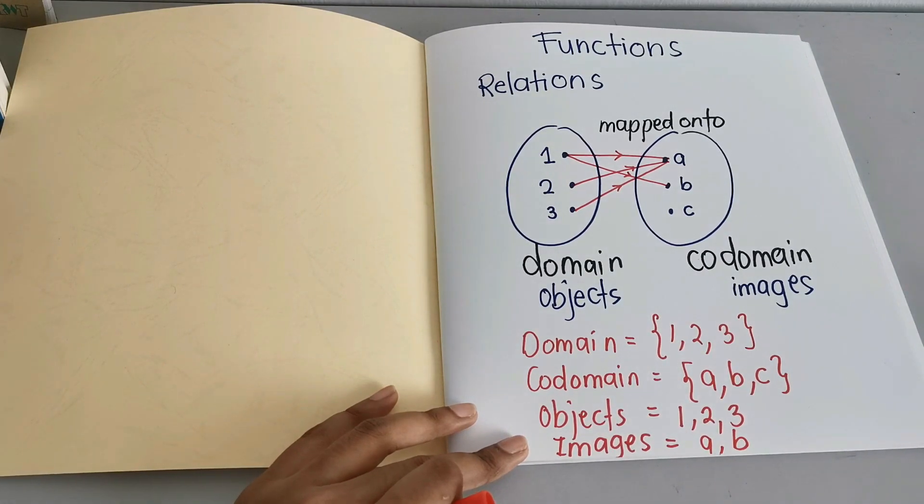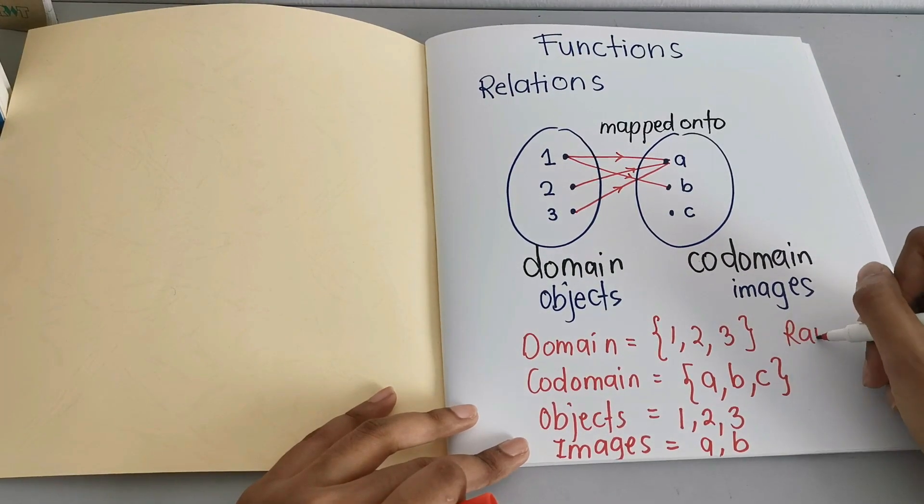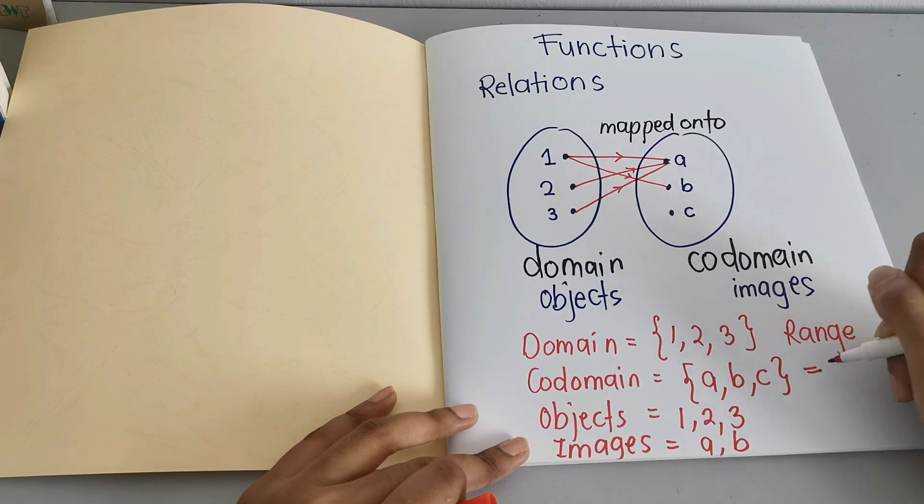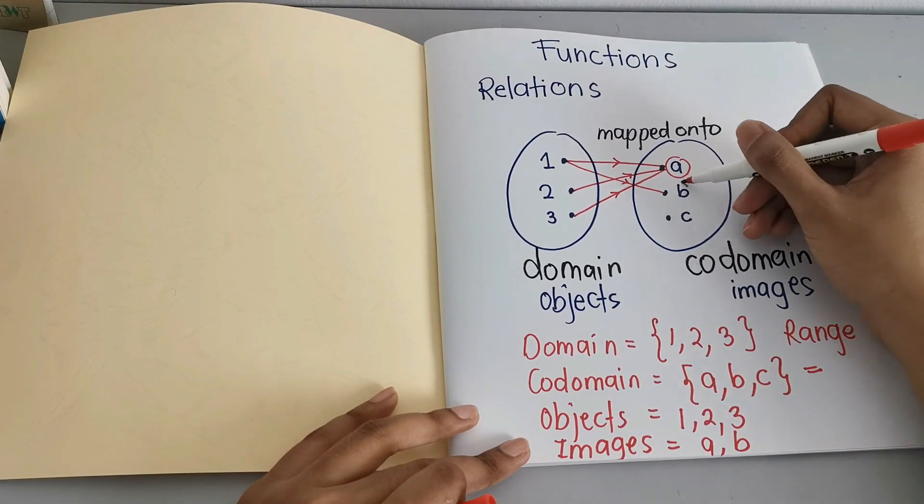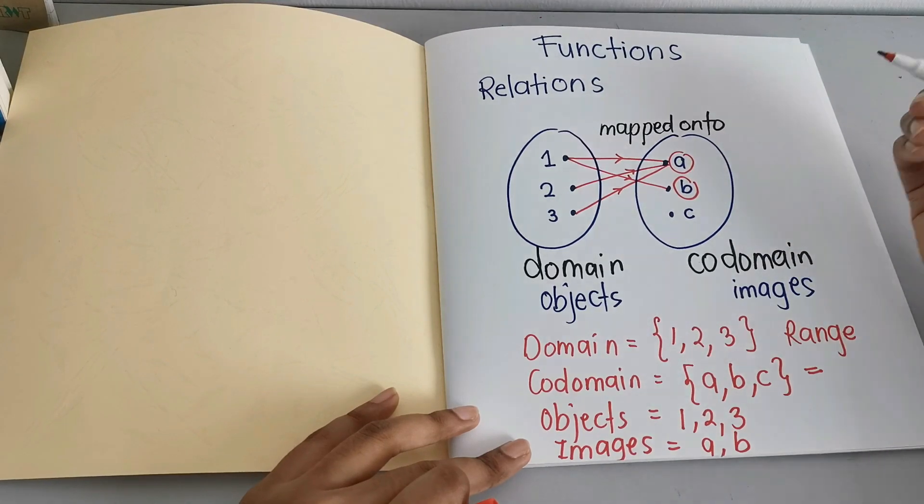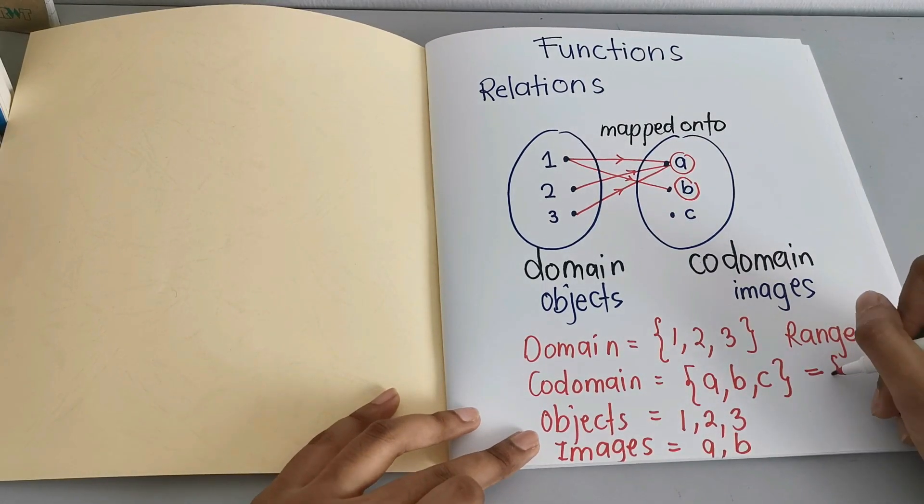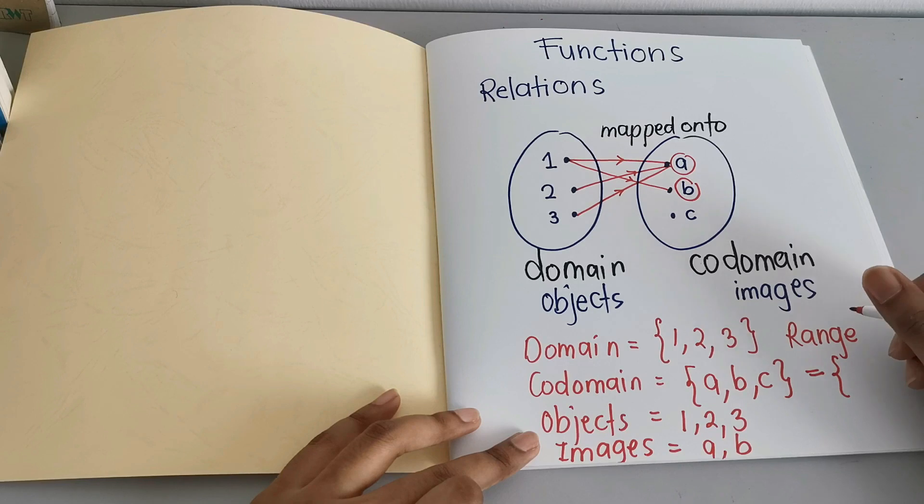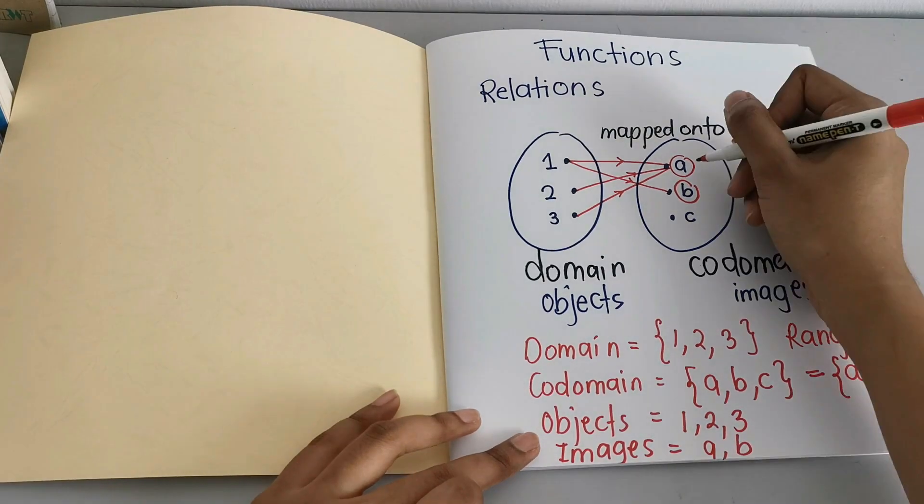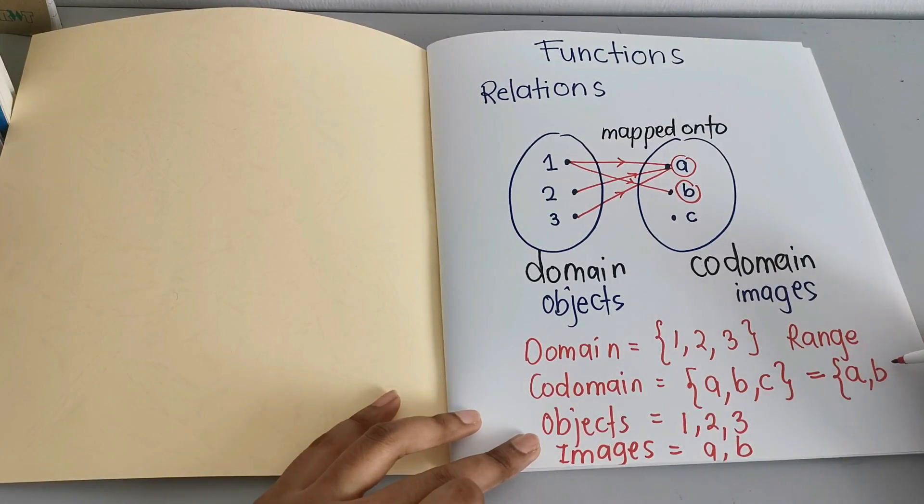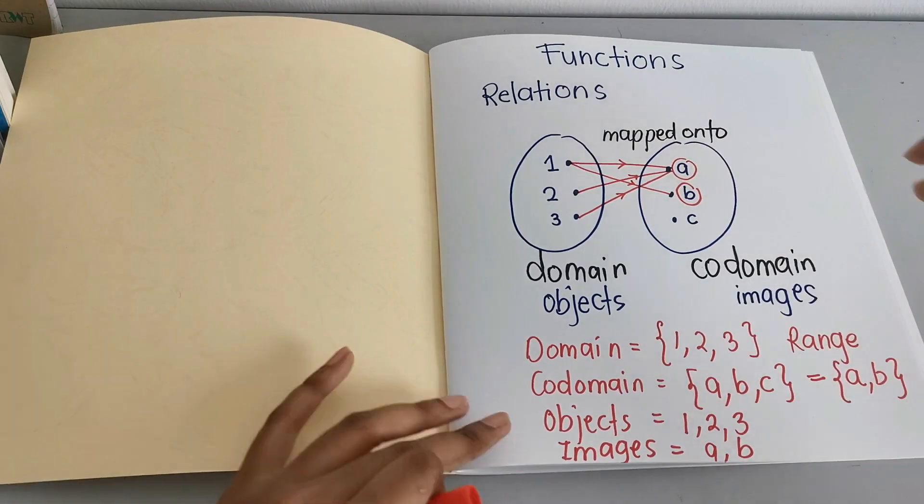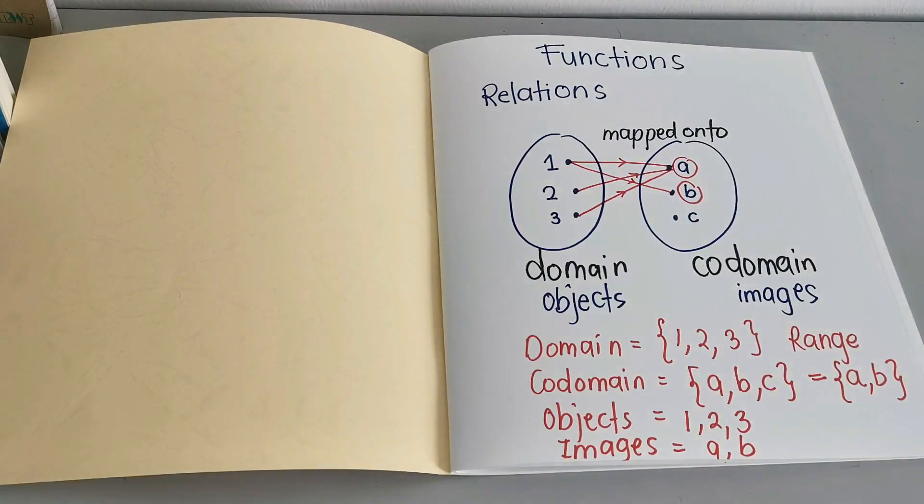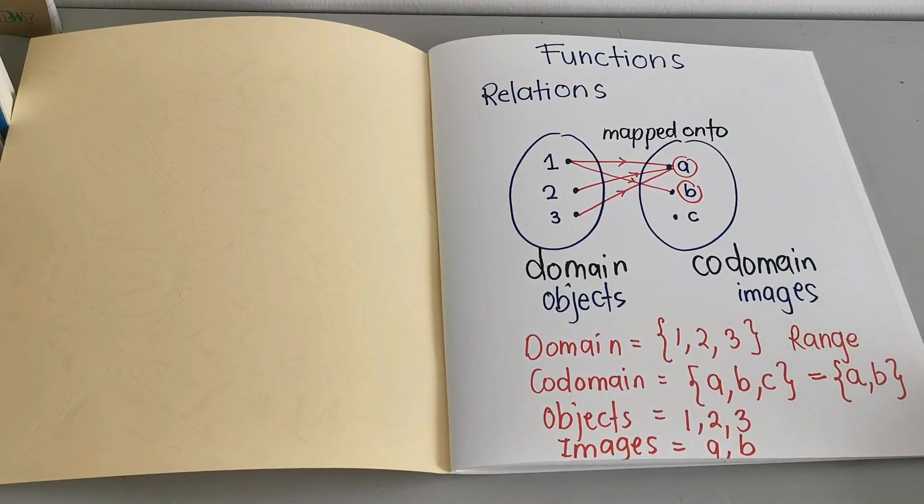And finally, we have range. So range includes only the elements which are mapped, meaning that range, we have to use curly bracket and write down the images that have been mapped to it. So the range will only be A and B. So this is the basic concept that you first need to understand.